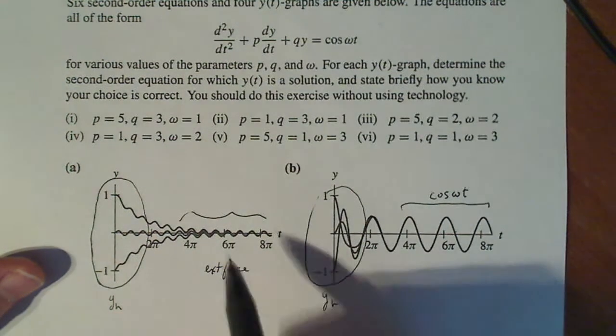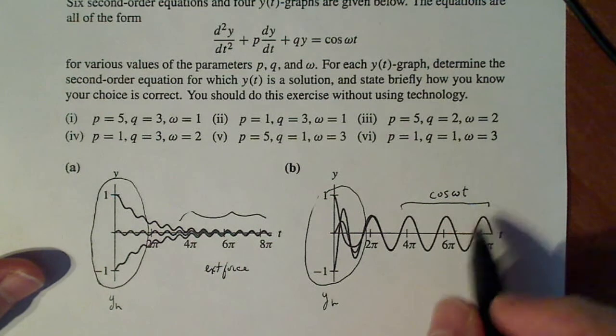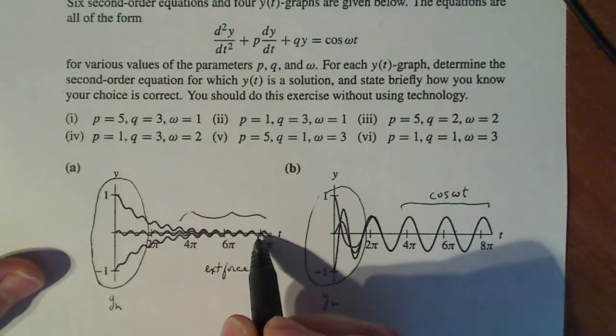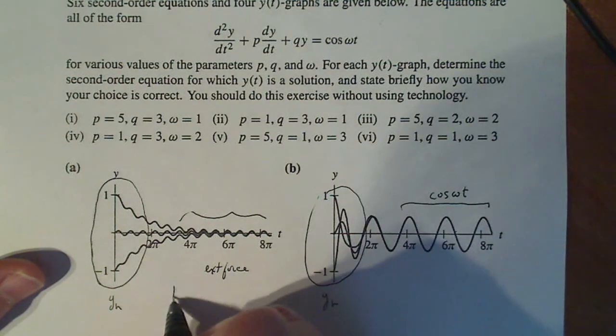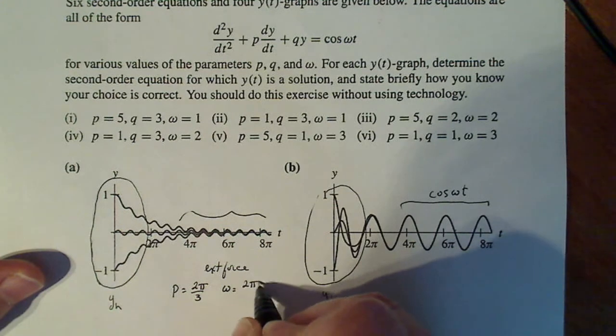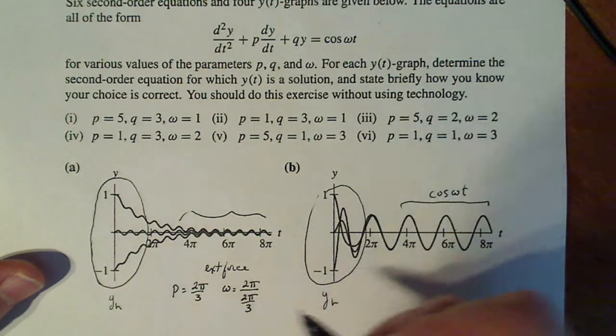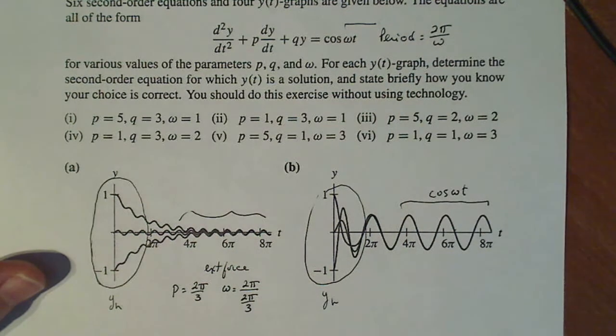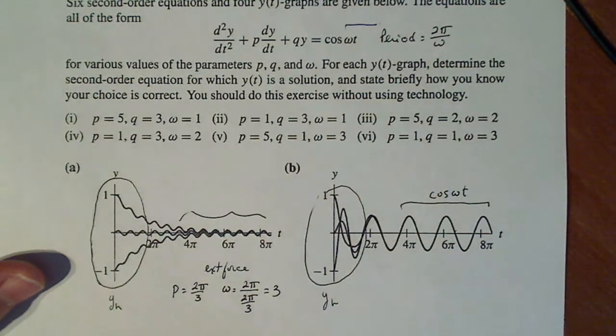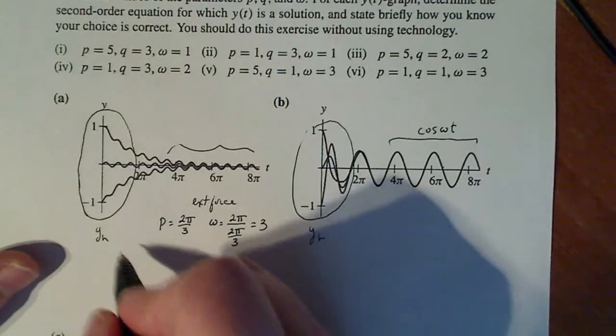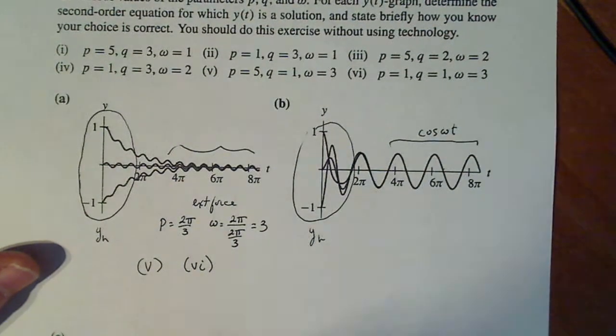So what I did first is I took a look at the period of these, each of the external forces. And then that could tell me right away what omega is and maybe eliminate a few things. So here I noticed that I have one, two, three waves between 6π and 8π. So that means my period is 2π divided into three pieces, which means that omega is 2π divided by the period, 2π divided by 2π/3. The period for this guy is defined as 2π over omega. So if I want to find omega, I can have the period and then solve for omega. In this case, omega turns out to be three. So that just narrows down the possibilities for this one to be part five or part six.